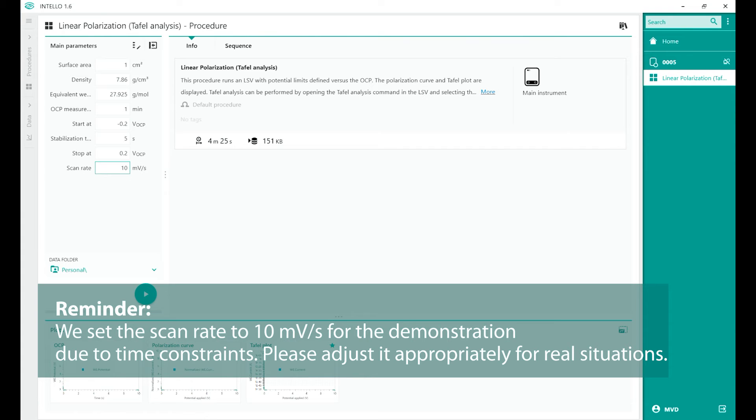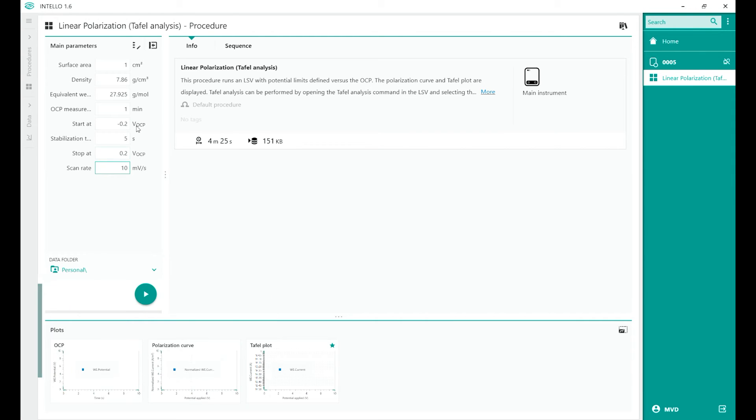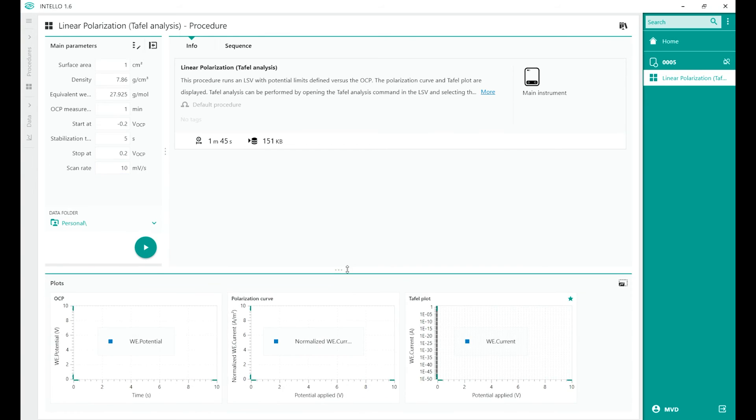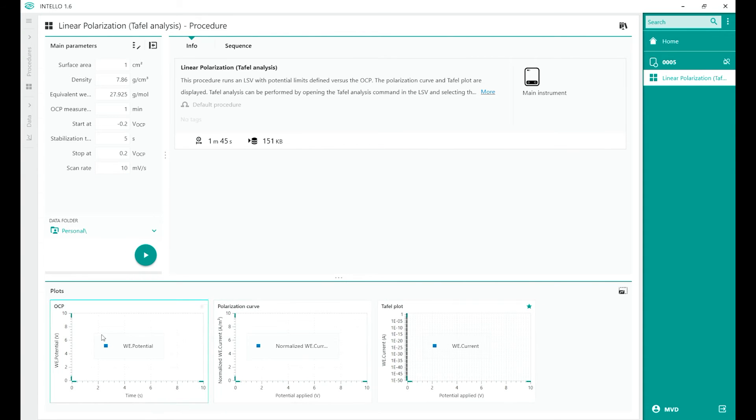Normally you scan at a very low rate, but for this video we're going to speed up the process. We're going to scan from minus 0.2 volts versus OCP to plus 0.2 volts versus OCP. After this adjustment is done, we can increase the plots, polarisation curve and TAFEL plot. Everything is set. We have our instrument selected. Procedure is ready to start.